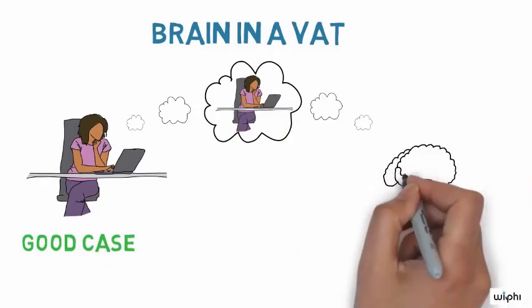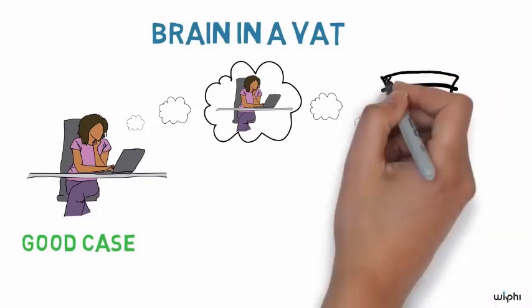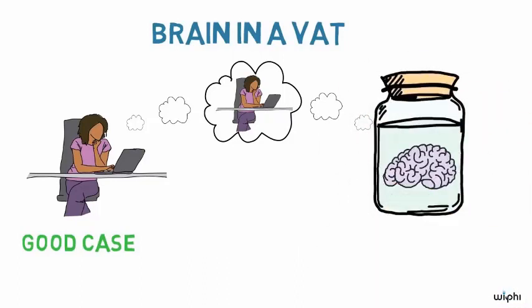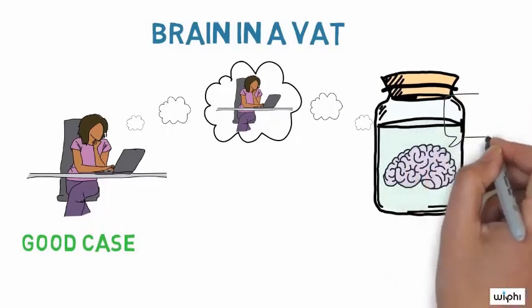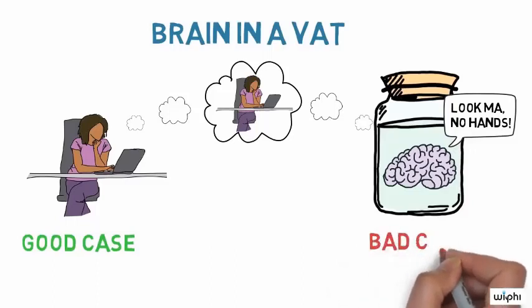It's a problem that your experience feels just like the experience of the brain in the vat. He doesn't know that his hand is in front of him. He's just a brain. He doesn't even have hands. We call this the bad case.